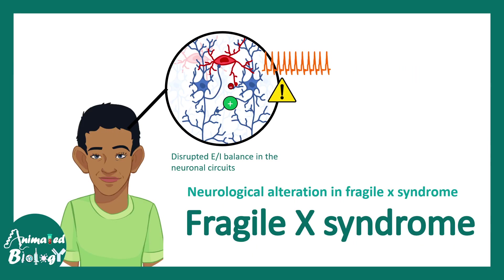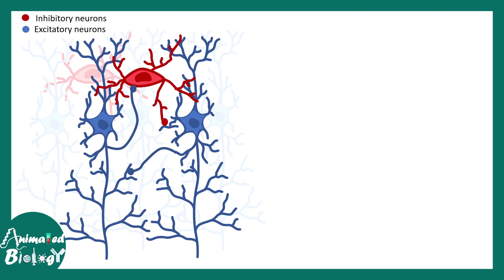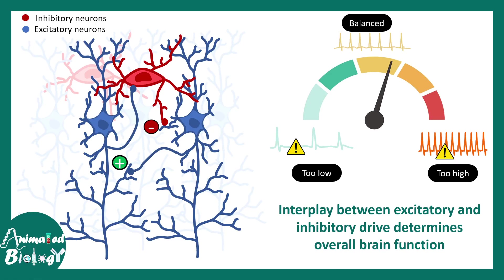Common neurological alterations in these patients include disrupted excitatory-inhibitory balance, as figured out from FMR1 knockout mouse models. In any normal neuronal circuit, there are excitatory and inhibitory drives — proper balance and interaction between them is essential. In FMR1 knockout or Fragile X Syndrome, and many other autism-related disorders, this circuit activity is disrupted. Too low or too high activity in the neuronal circuit is harmful — a balanced level is required.